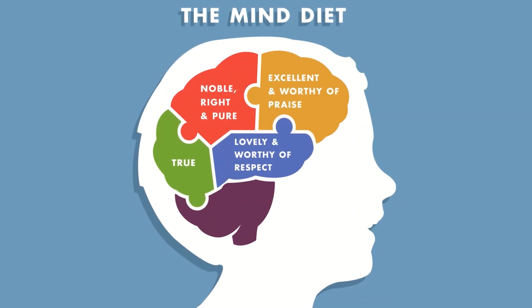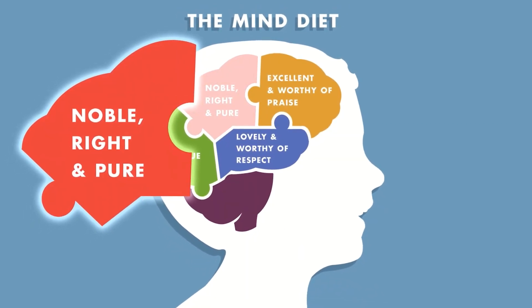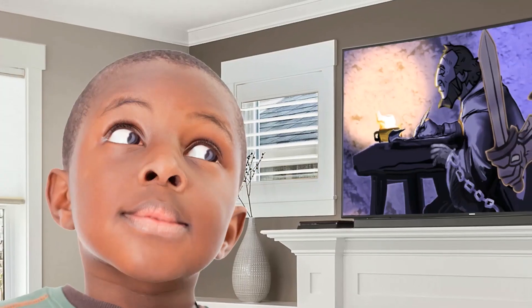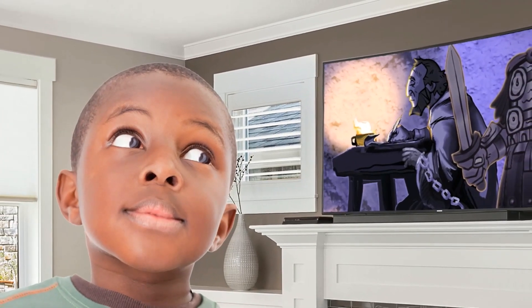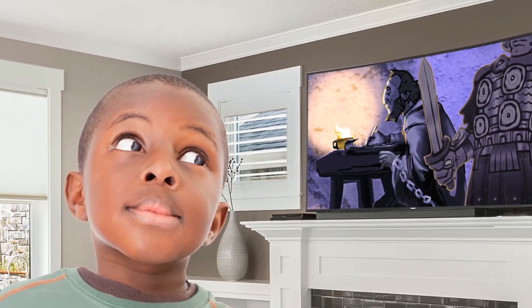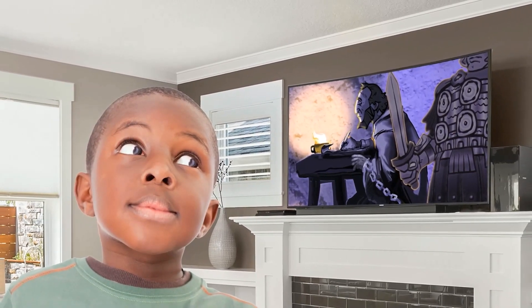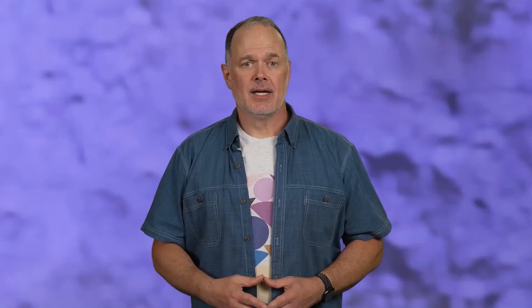Next up in our mind diet: think about things that are noble, right, and pure. It's not always easy to do the right thing, but it sure helps when you choose to be around people who make good choices. You can also pay attention to the stories of people in scripture, in history, and even now, who live in a way that honors God and shows love to the people around them. This doesn't mean you have to pretend nothing's wrong in the world or even in your life, but you can choose to put your focus on what's right instead of what's wrong.